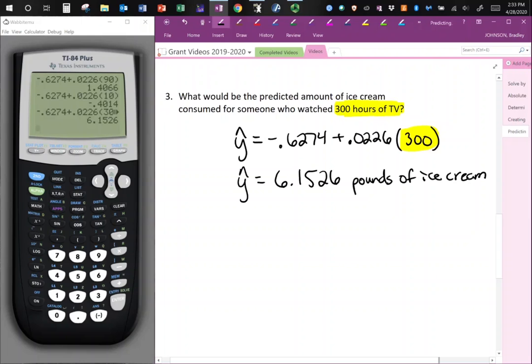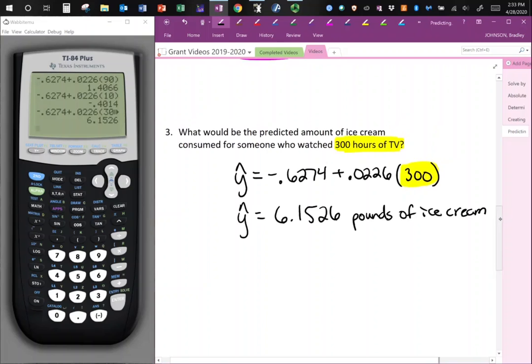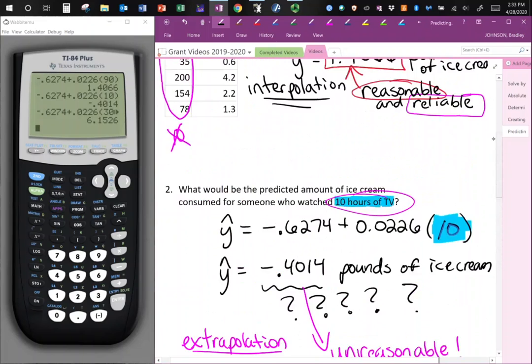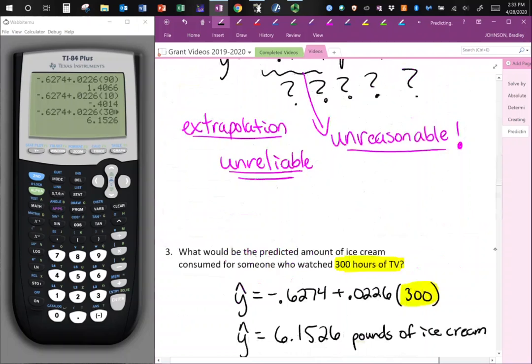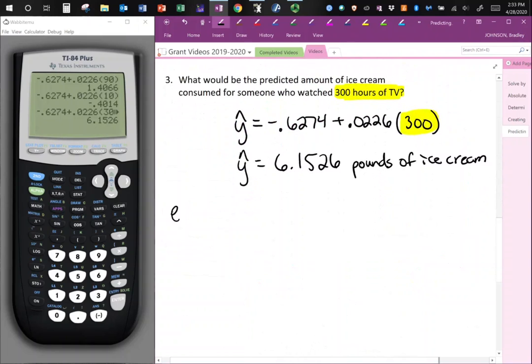So now 300. Let's think about 300. Is 300 within the predicted x values? So think about 300. 300 goes well beyond 200 and 200 is the max. So it's not within. So this is actually extrapolation again. So we have extrapolation here.